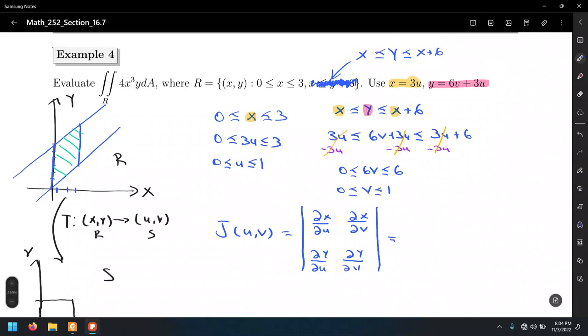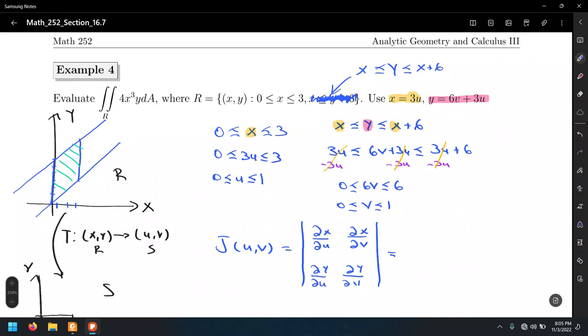Let's take the partial of x with respect to u, that's 3. The partial of x with respect to v, notice x doesn't have any v, so the derivative will be 0. The partial of y with respect to u, that's 6. The partial derivative of y with respect to v, that's 3.